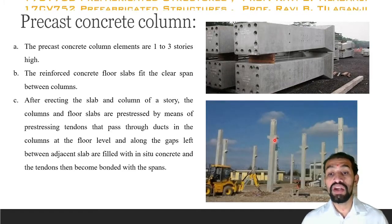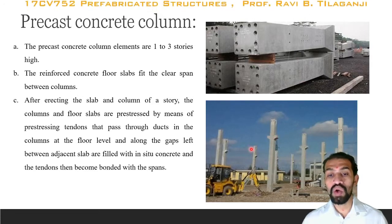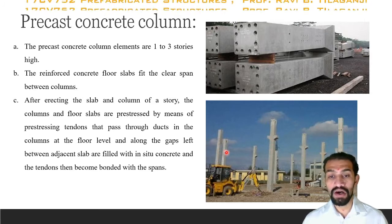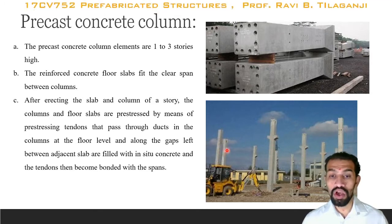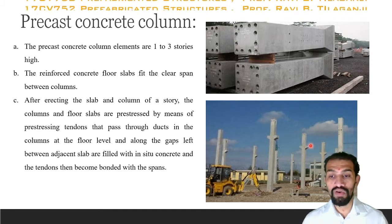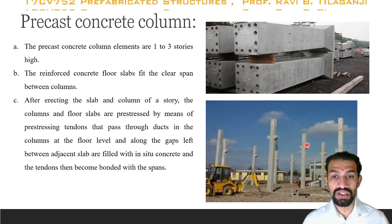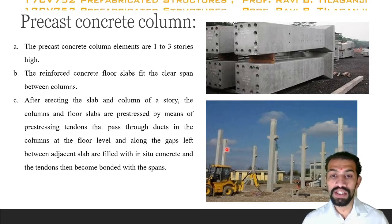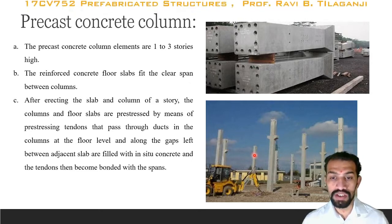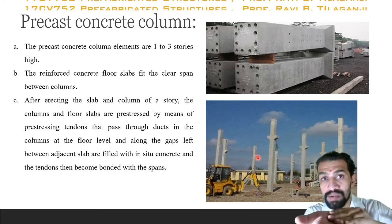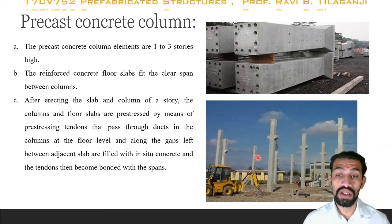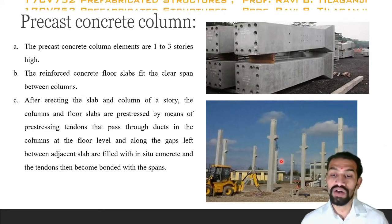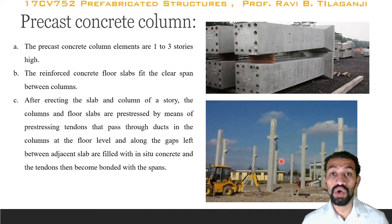The nibs on the columns give an ornamental or old-style look. This resembles the stone columns constructed for temple constructions in earlier times. Those supporting structures for slabs seen in ancient stone construction can be replicated in precast columns, providing a good architectural look for the columns and the whole building.